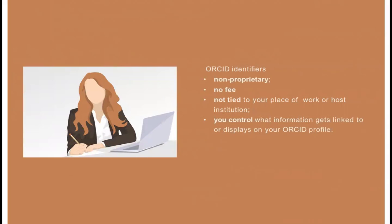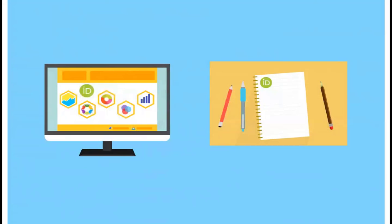ORCID identifiers are non-proprietary and there is no fee to maintain yours. They are not tied to your place of work or host institution, and you control what information gets linked to or displays in your ORCID profile. The registry isn't a social network — your ORCID profile simply displays the activities, education, employment, and funding you add or approve from trusted organizations. Having your ORCID ID means that all your papers, data sets, and grants will have the ID identified to that research output.